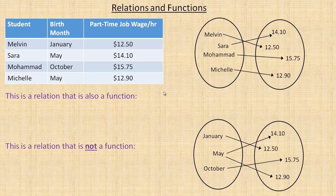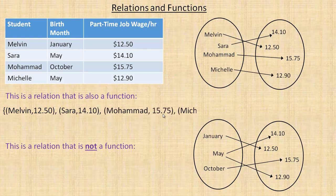We could write that mapping diagram out as a list of ordered pairs: Melvin 12.50, Sarah 14.10, Mohamed 15.75, and Michelle 12.90. And that's an example of a relation that is a function.